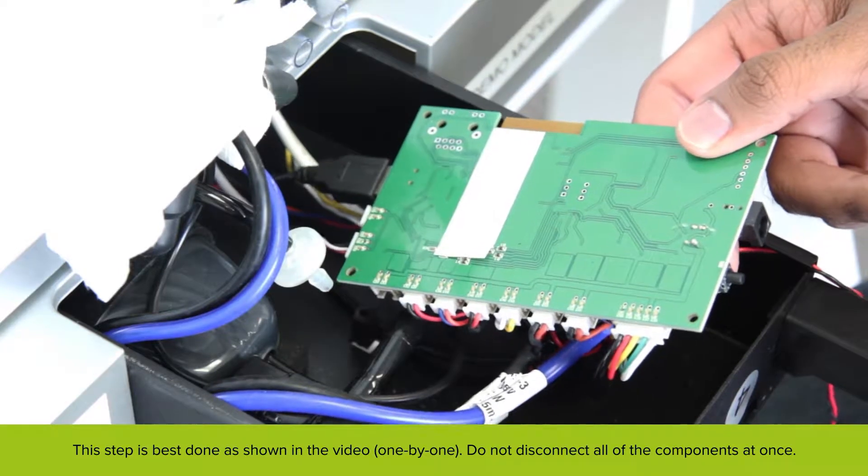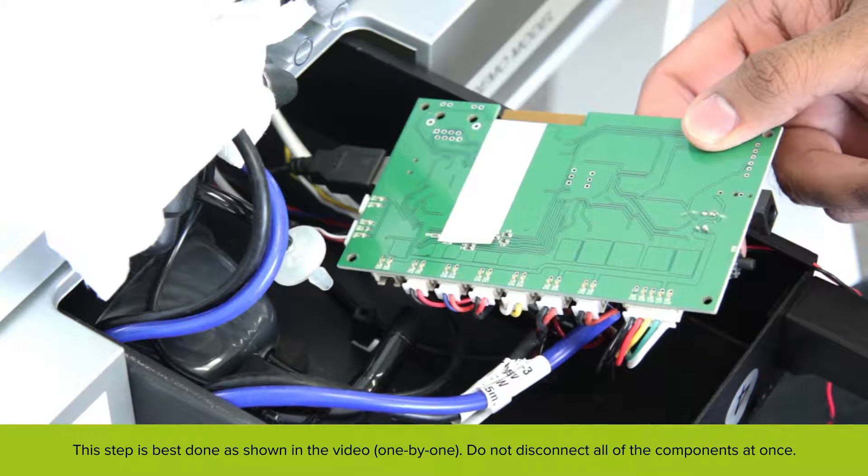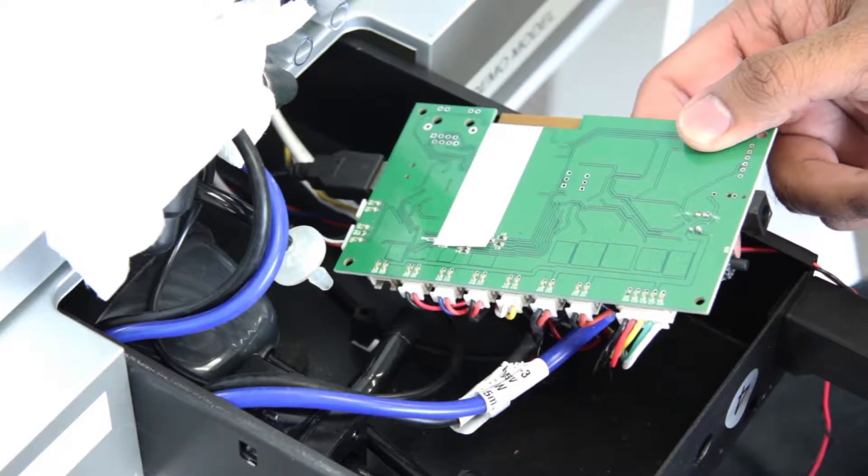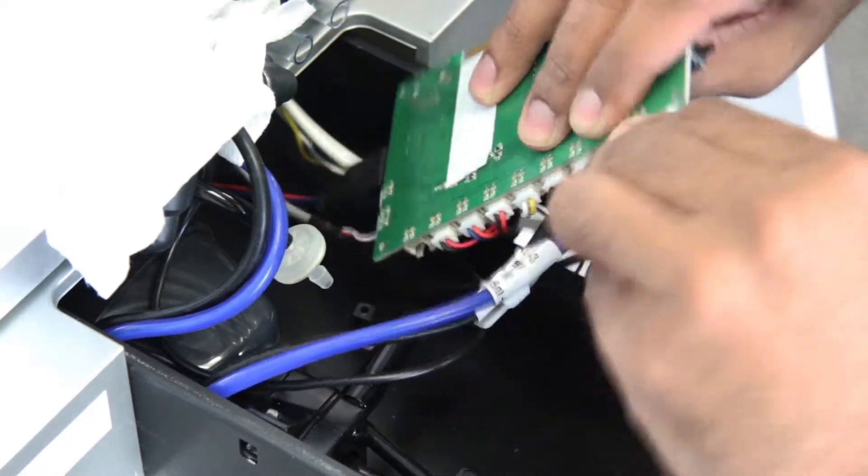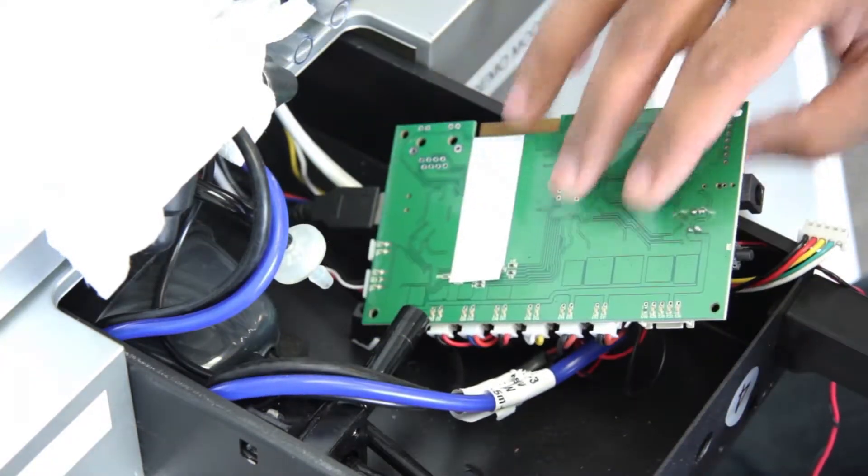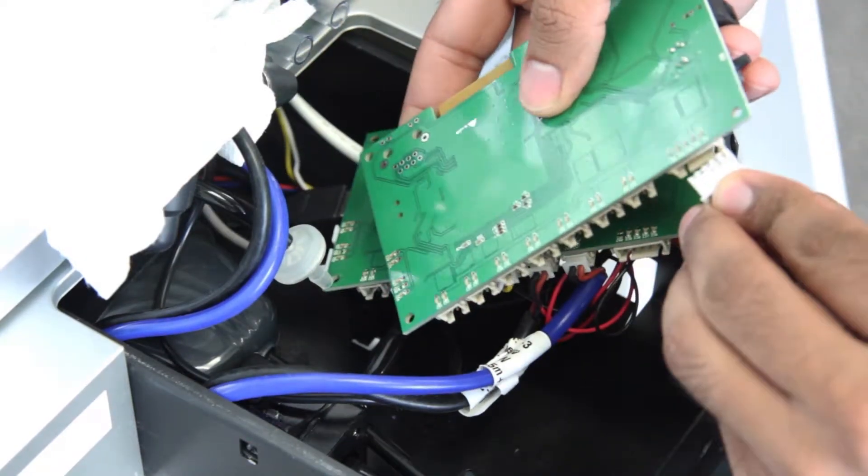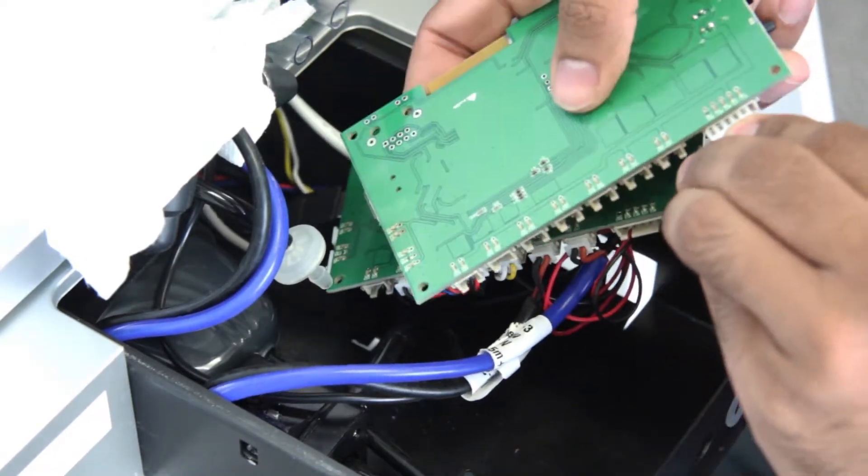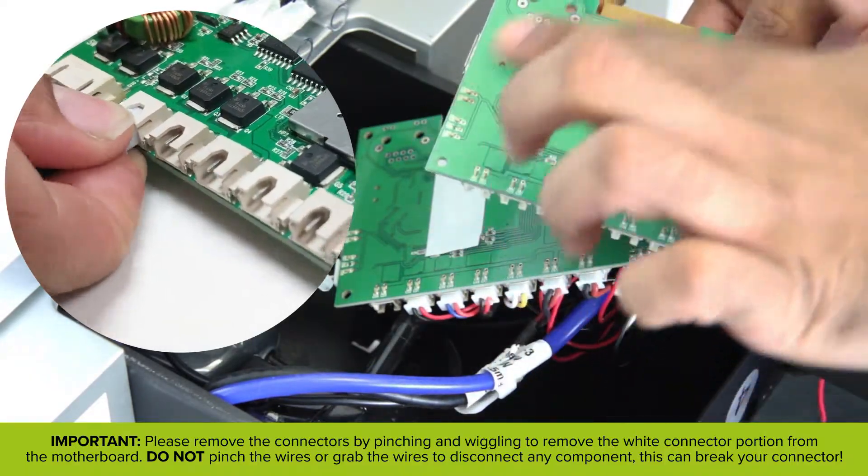Now we will begin by disconnecting the connectors of each component one by one and replacing them on the new motherboard. Disconnect the first connector, take your new motherboard, and attach it to the new one. Now do the same for all the remaining ones.